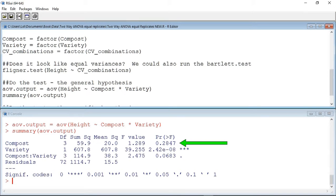The probability value for compost is 0.2847, which is above our 0.05 transition value. Thus, this is not a significant result. We cannot reject the null hypothesis, which states that there is no difference in the height of plants grown in different composts.